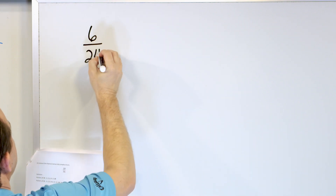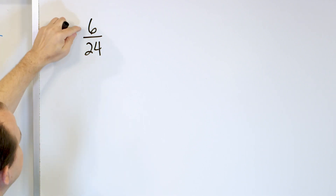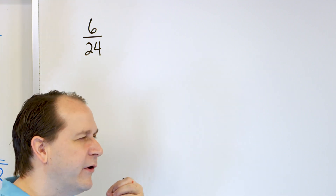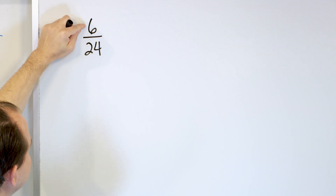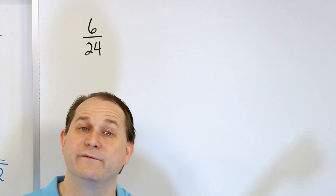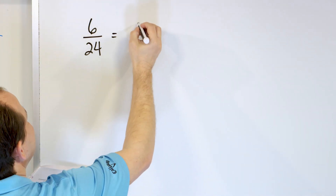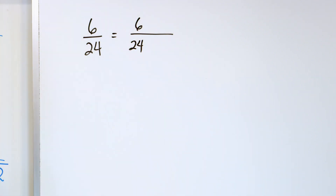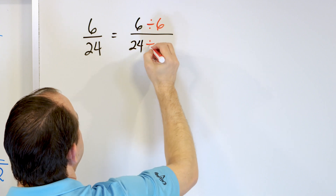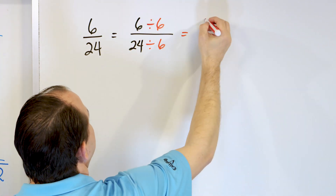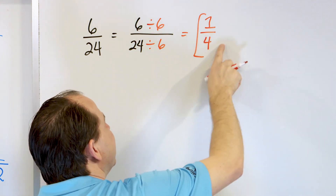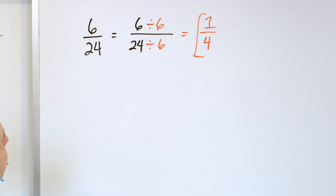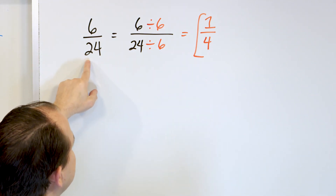Problem 3: 6/24. These are both even numbers - I could divide top and bottom by 2. But try to think: is there anything bigger I could divide by? I know I could divide by 6 because 6 times 4 is 24. So I'll divide the top by 6 and the bottom by 6: 6 divided by 6 is 1, and 24 divided by 6 is 4. The answer is 1/4, and there's no further simplifying. It only took one step because I divided by the largest common factor.